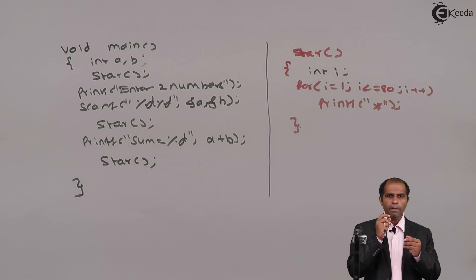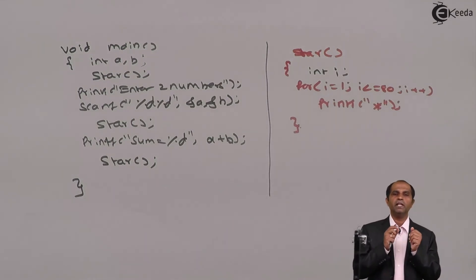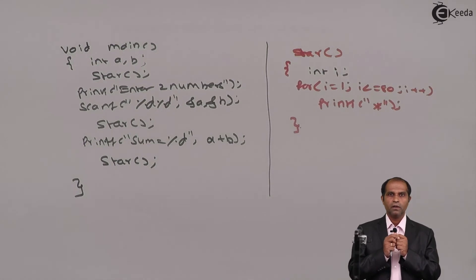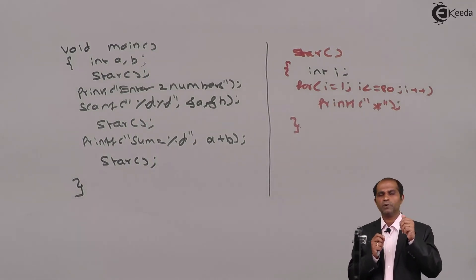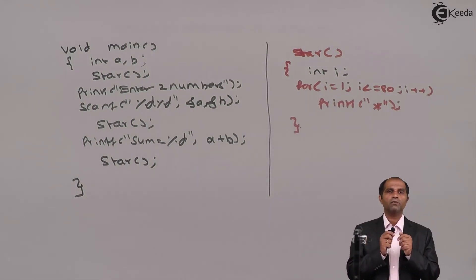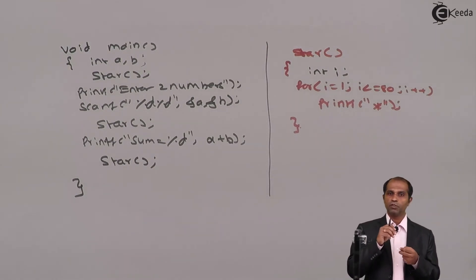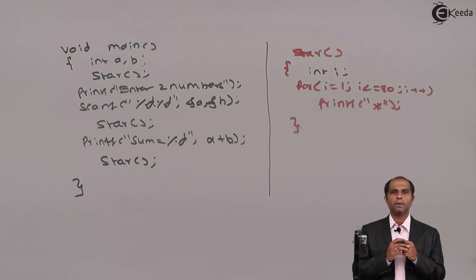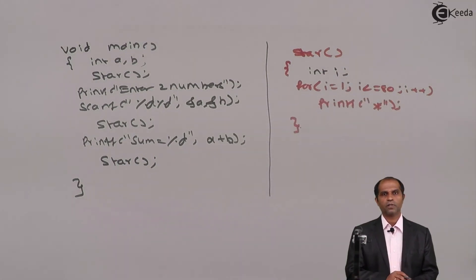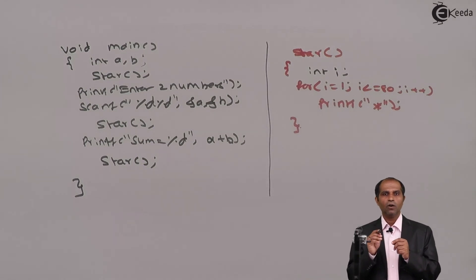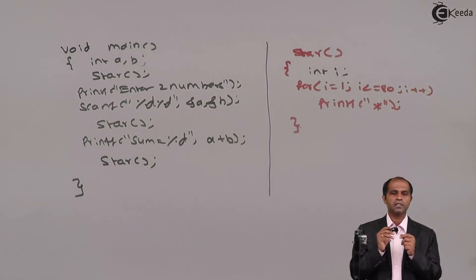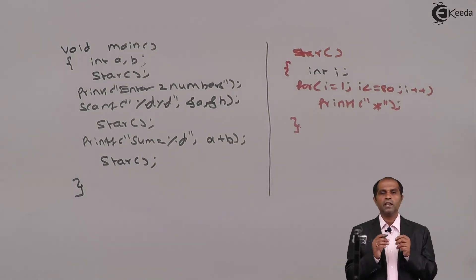The fourth advantage is that debugging — tracing of errors — is very easy. If the numbers are read properly and the asterisk line prints correctly but the sum doesn't display correctly, I trace only main. If the asterisk line doesn't print correctly, I trace only the star program. So we trace either star or main based on the nature of the output error.